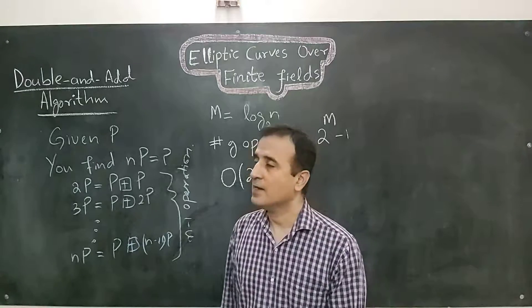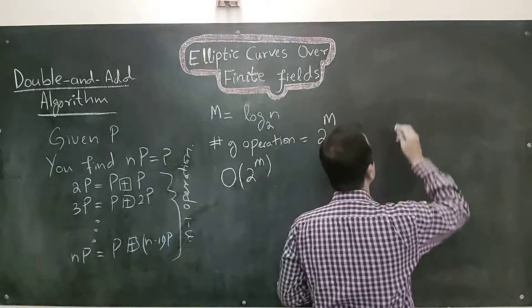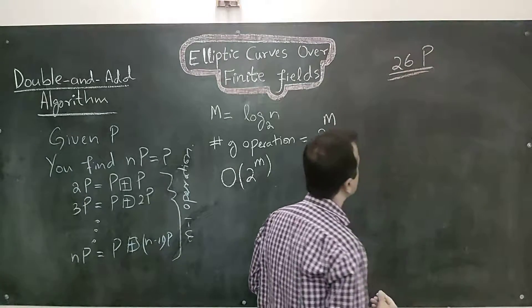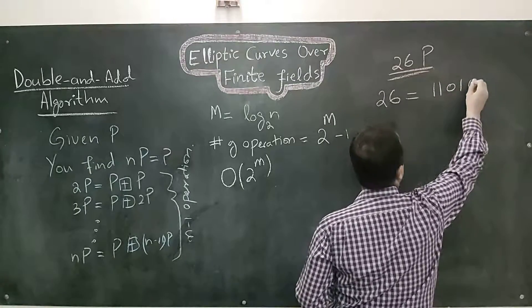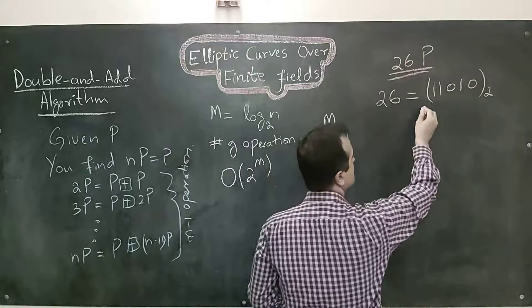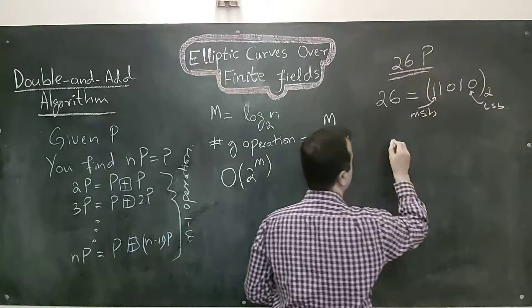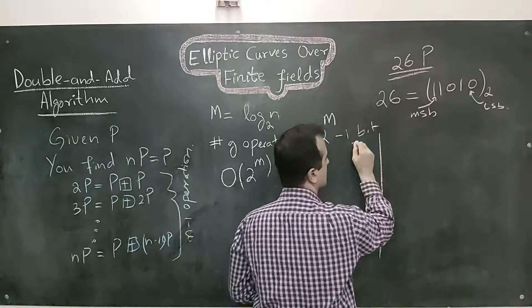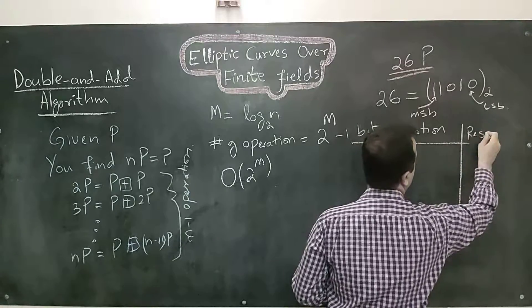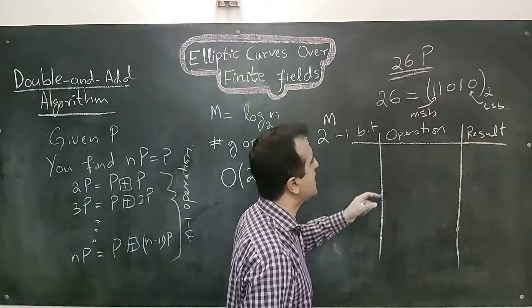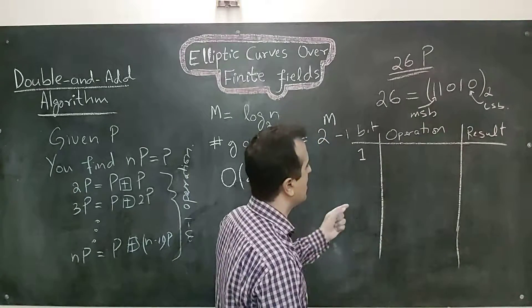Let me explain the double and add algorithm using an example. In this example, I am asked to find 26P. I will first write 26 in terms of binary, where this is the most significant bit and this is the least significant bit. I will scan my bits from the most significant to the least significant bit. I will first start from the first bit which is 1, and I will always ignore the first bit.